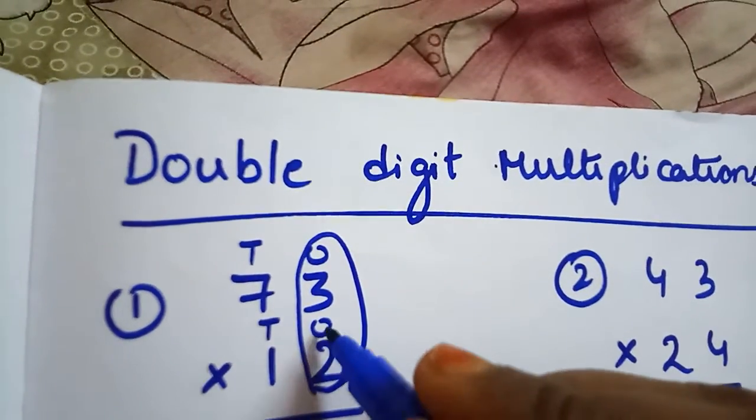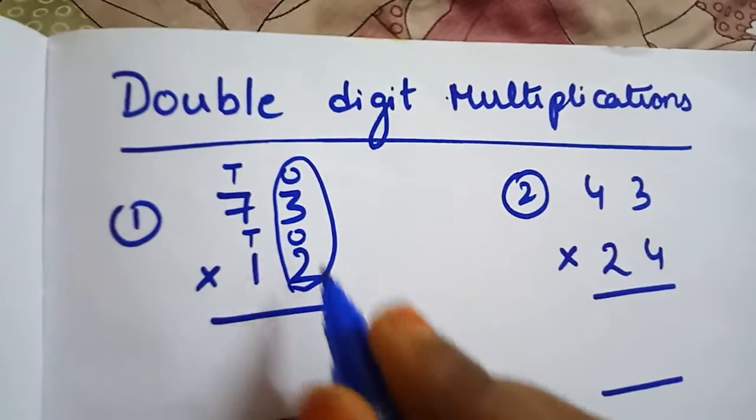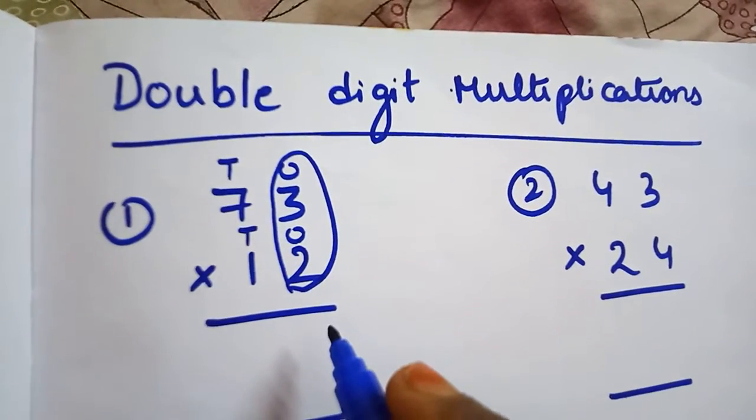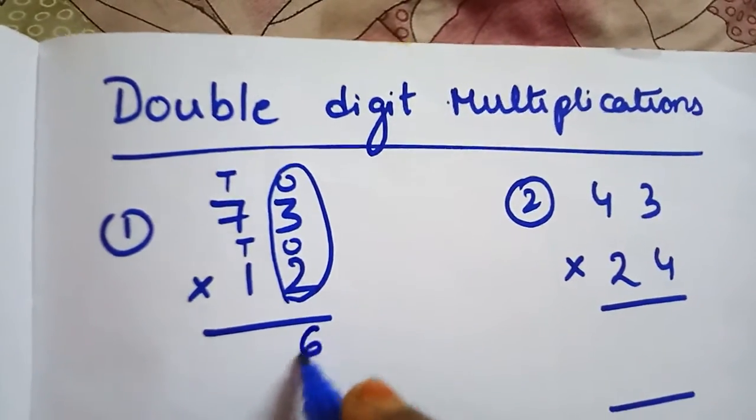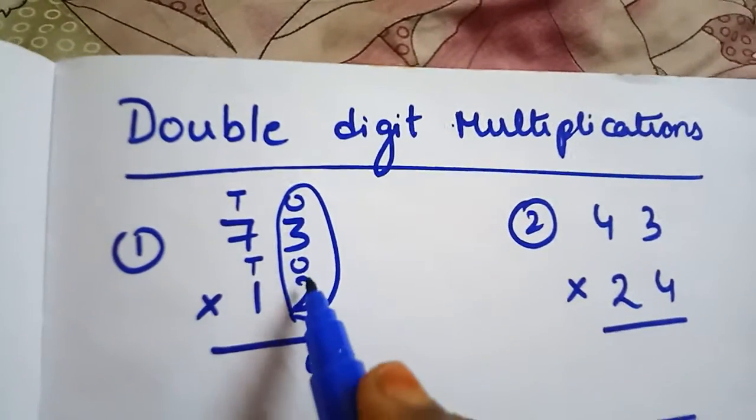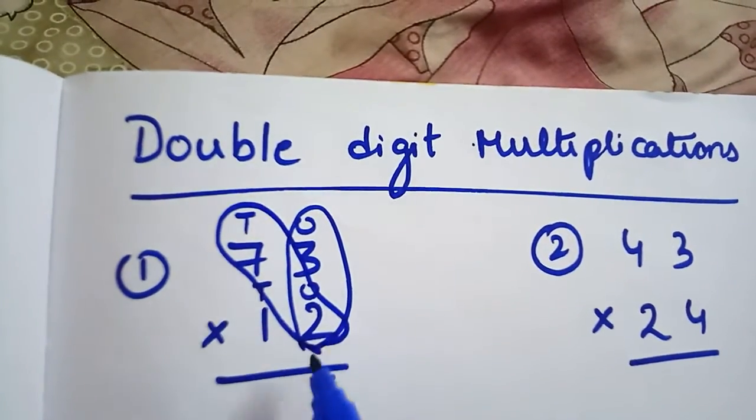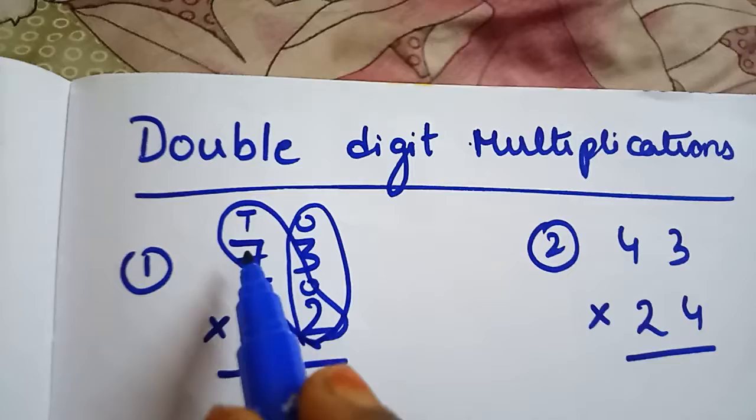First multiply 2 into 3, ones place with ones place. 2 times 3 is 6. Write on the right hand side. Next, ones into tens, so we have to multiply 2 with 7. Two sevens are 14.